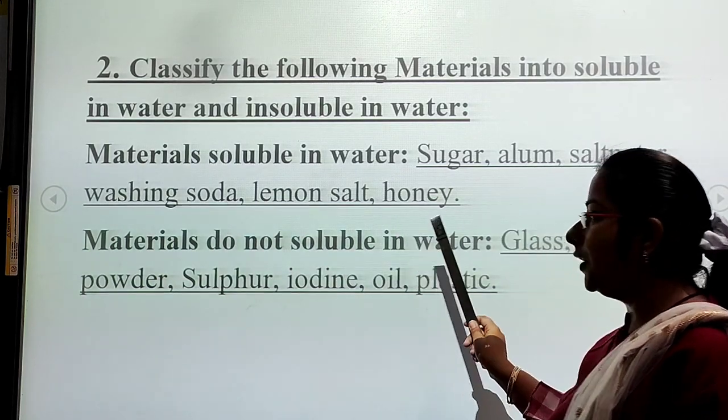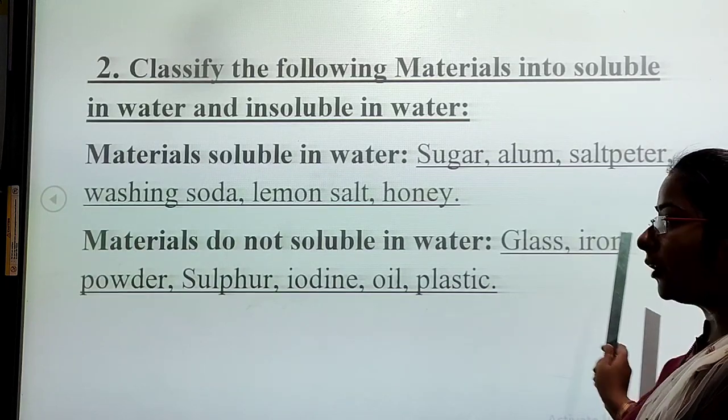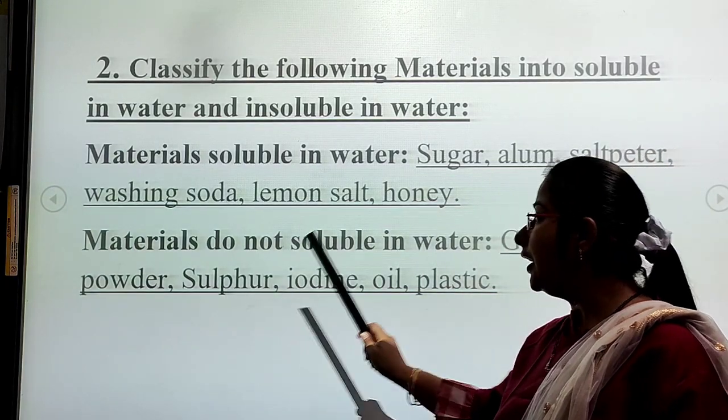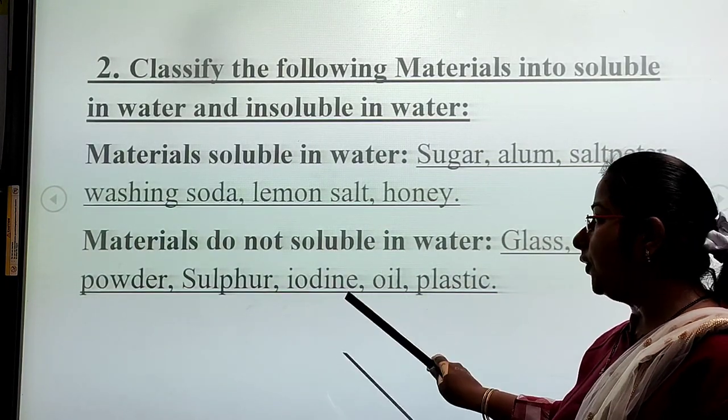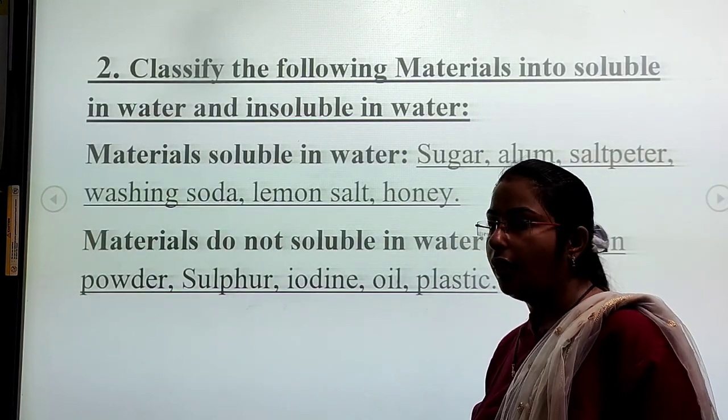Materials not soluble in water: These materials are not soluble in water. They are glass, iron powder, sulphur which is a chemical, iodine, oil, plastic. These are insoluble in water.